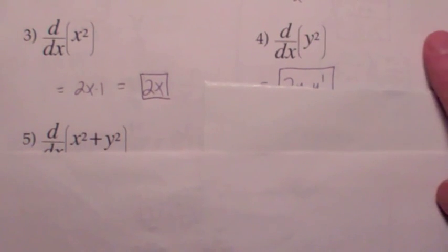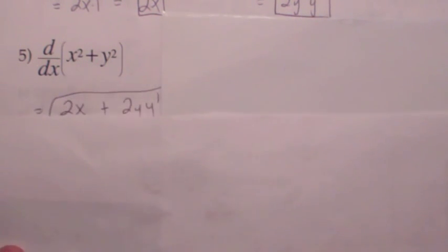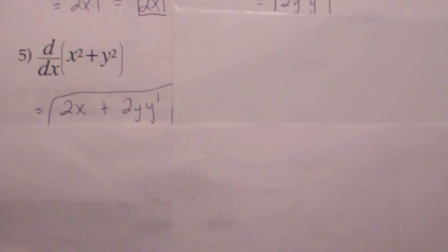What's the derivative of x² + y² with respect to x? You take the derivative of each term: the derivative of the first with respect to x gives you 2x, but the derivative of the second term with respect to x gives you 2y times the derivative of what's inside with respect to x, so that's why you get 2y·y-prime.